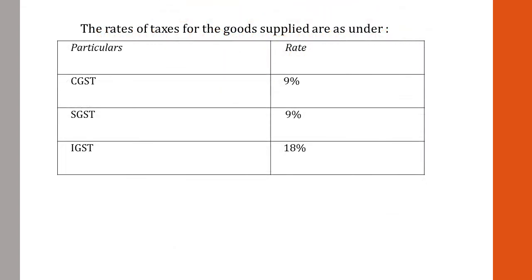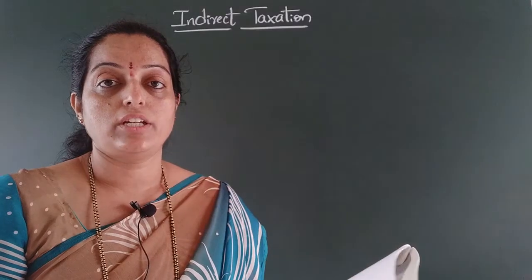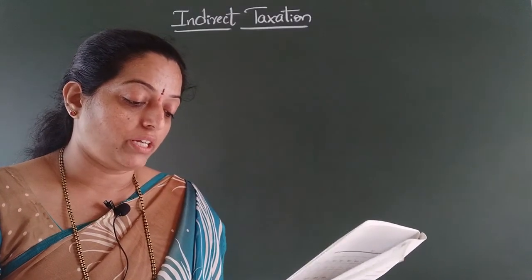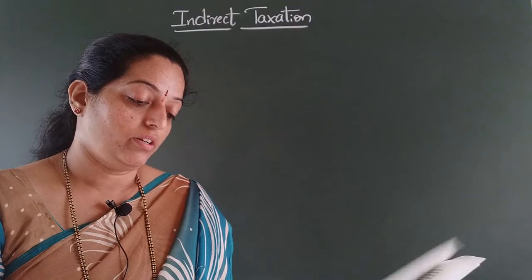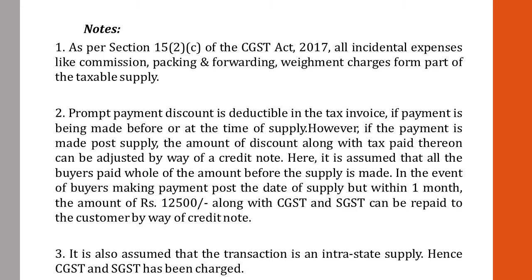The rates of tax for the goods supplied are: CGST 9%, SGST 9%, and IGST 18%. As per the CGST Act 2017, all incidental expenses like commission, packing and forwarding, and weighment charges form part of the taxable supply and must be added to the sale price.